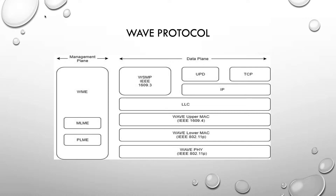This layer allows operations of upper layers across multiple channels without knowledge of physical layer parameters. The WME, wave management entity, is a software element used for managing the wave subsystem. This element is responsible for service advertisement, handling configurations, and management of frames for the MAC and physical layers.